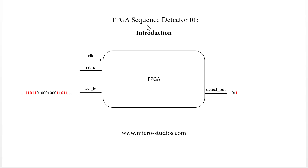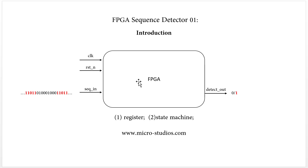For this FPGA sequence detector, we have at least two ways to implement it. The first solution is a reduced solution. Another solution is a state machine solution. We will explain every detail about the two solutions in the future video. This is the introduction video. I'm Michael, and see you next time.